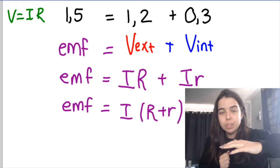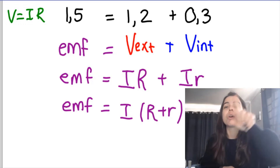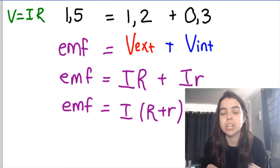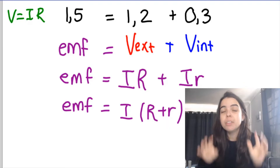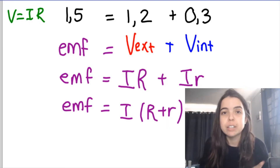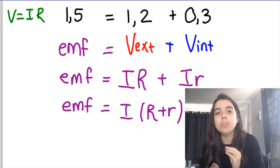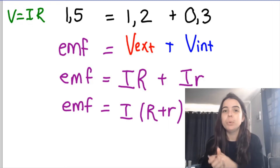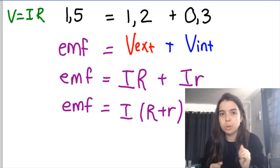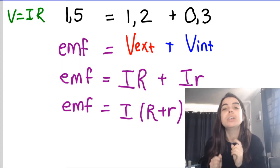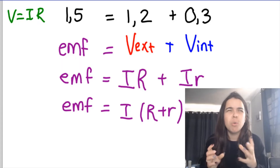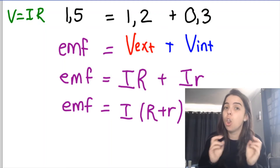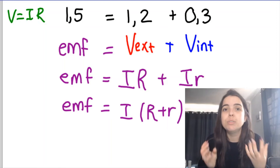When I close that switch, now there's current flowing through my circuit, there's current flowing through my battery, and that voltmeter connected across the terminals of the battery will now no longer read the EMF — that reading will drop. It will now read V external, or V terminal, or V load — the external potential difference. So in our example, if 1.5 was the EMF, then I close the switch and that reading drops to 1.2. The 1.2 is V external. What happened to the 0.3? That 0.3 we informally refer to as lost volts — more correctly, it's V internal.